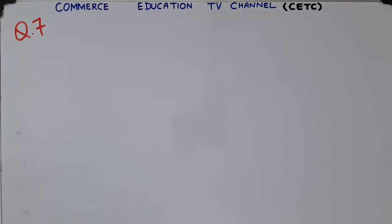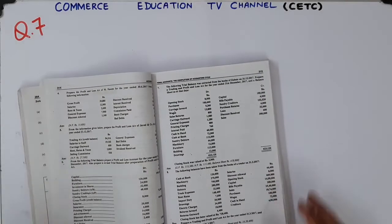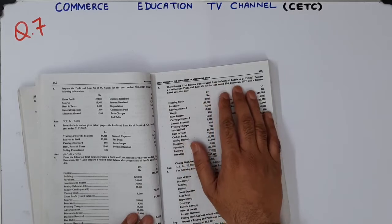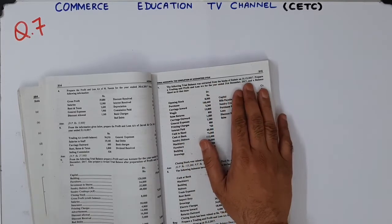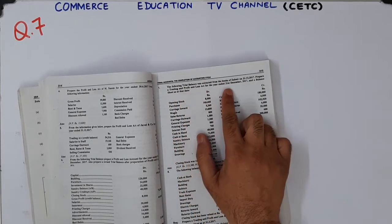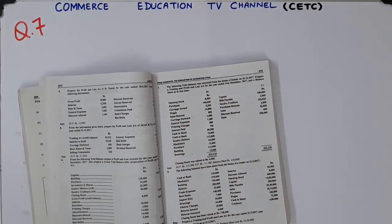Bismillahir Rahmanir Raheem. This is Question 7, Chapter 10. The following trial balance was extracted from the books of Zubair on 31st December 2017. We need to prepare a trading and profit and loss account for the year ended 31st December 2017, and a balance sheet as at that date. Let's go.